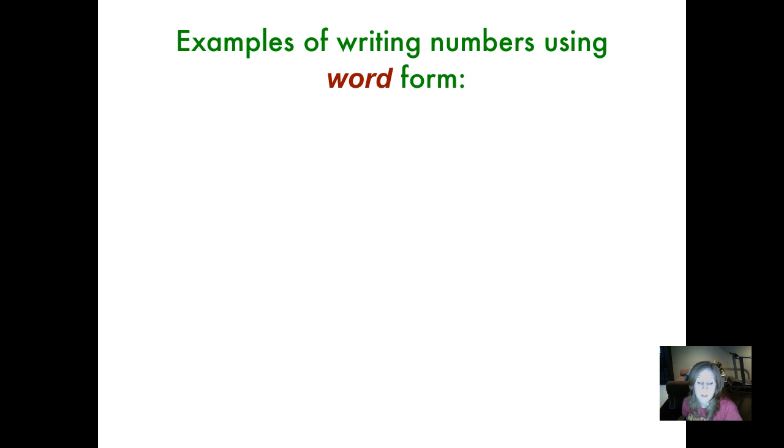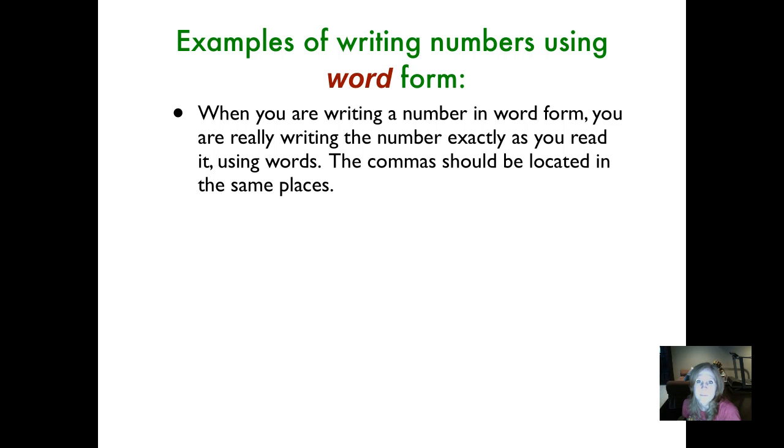Here are some examples of writing numbers using word form. When you're writing a number in word form, you are really writing the number exactly as you read it, just using words. The commas should be located in exactly the same places. Write this number in word form. Just start the tape again when you've got it written in your journal. Did you write 62,401? Remember, we never write the word and in a whole number.